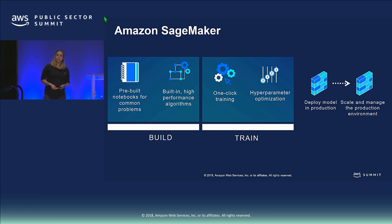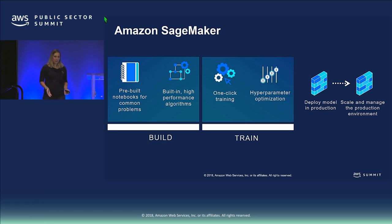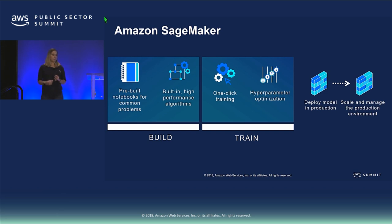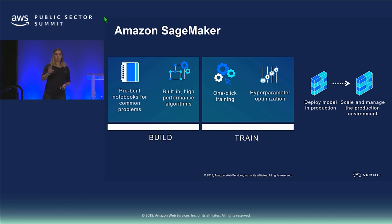We also recently launched the hyperparameter tuning feature. For anyone who's built a machine learning model, you know there are lots of knobs to twist. The hyperparameter tuning algorithm helps optimize that for you. You set ranges of values you're interested in and a budget for how much you want to spend tuning, and the algorithm makes smart decisions to help you achieve a more optimal model more quickly.